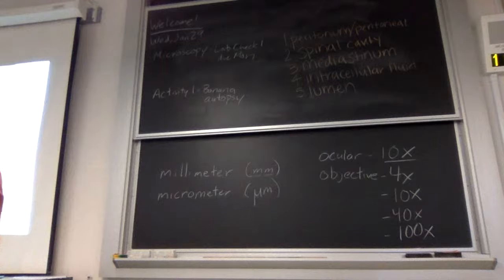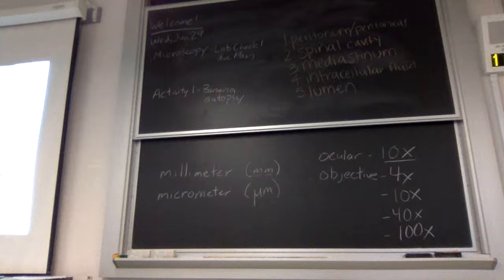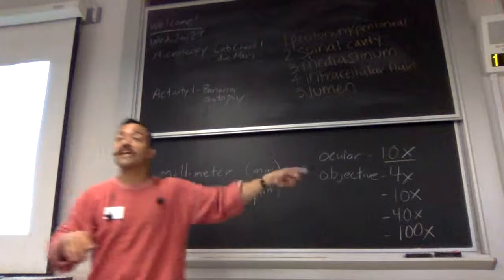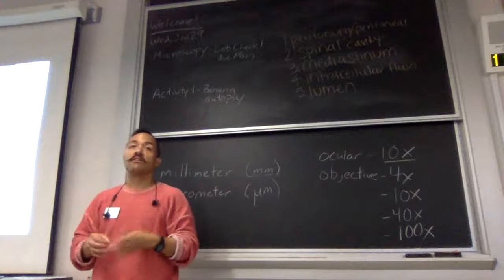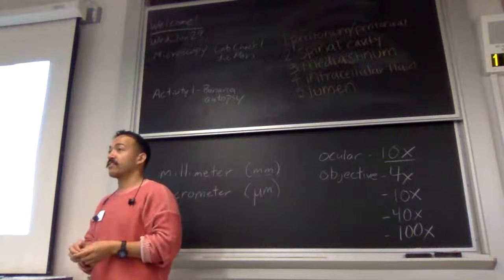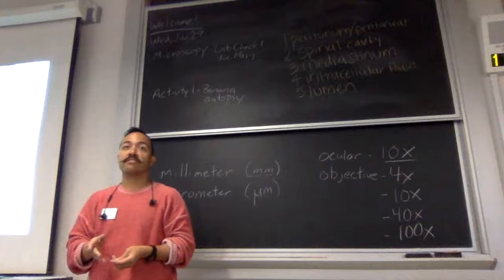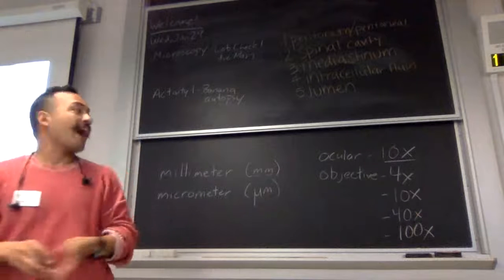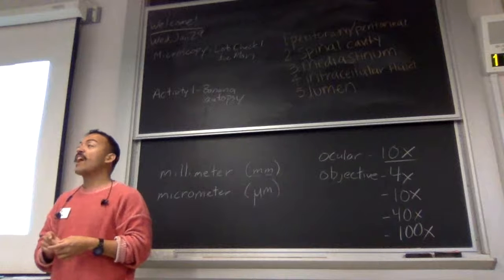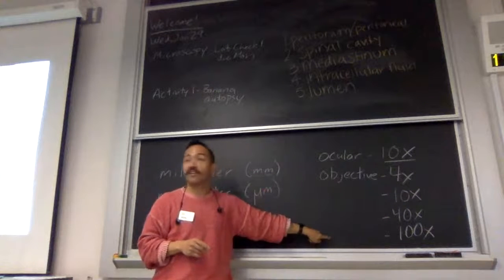So can someone tell me, if I'm viewing using the 4x objective, what's my total magnification? 40. You multiply the two — 10x ocular, 4x objective, that gives you 40x total. So what you're looking at is 40 times bigger than what it actually is. What would be the highest magnification then? 1,000. 10 times 100 gives you 1,000.